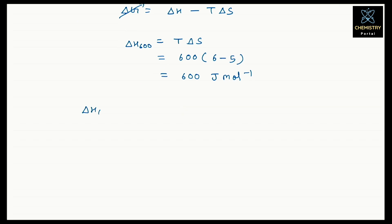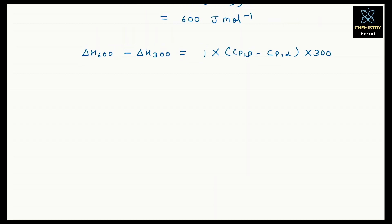Using the equation again: delta H at 600 minus delta H at 300 equals 1 times (Cp_beta minus Cp_alpha) times delta T. Cp_beta minus Cp_alpha equals 1, delta T equals 600 minus 300 equals 300, and delta H at 600 is 600. So delta H at 300 equals 600 minus 1 times 1 times 300 equals 300 joule per mole. This is the final answer.